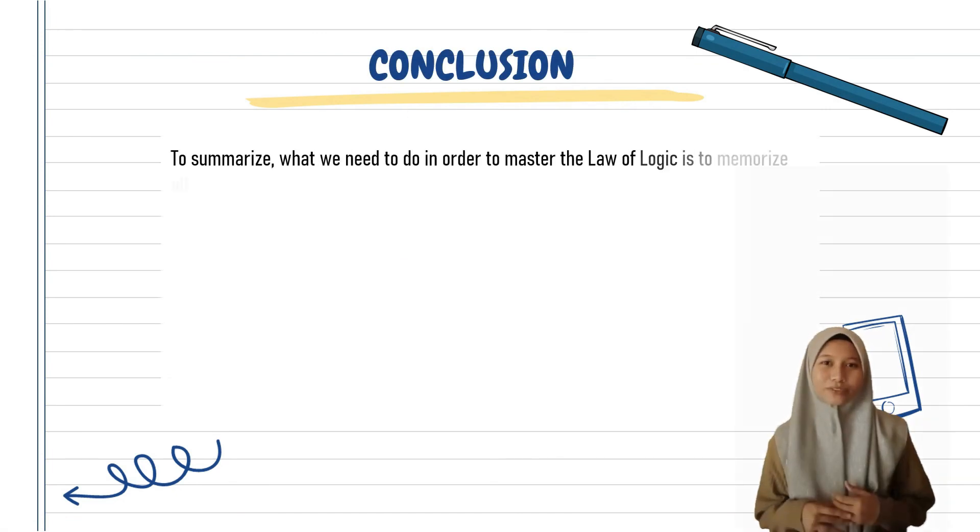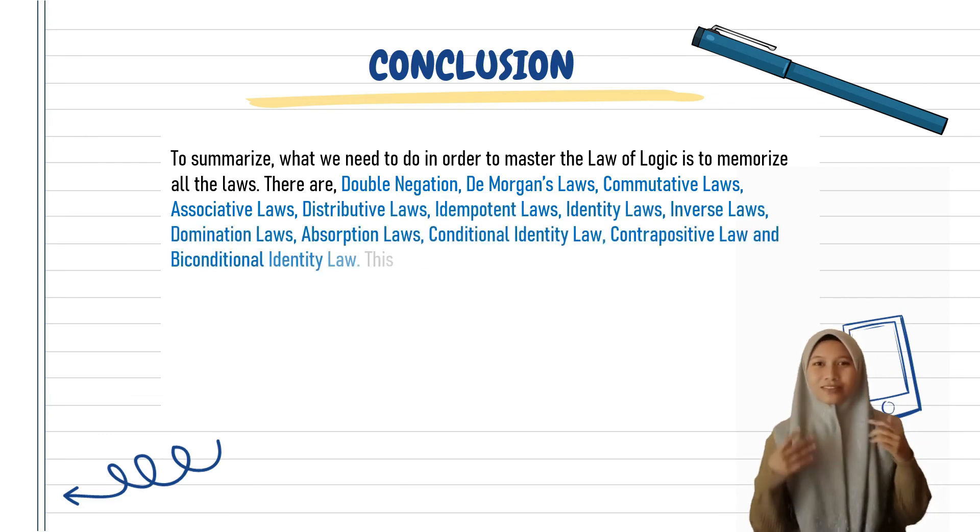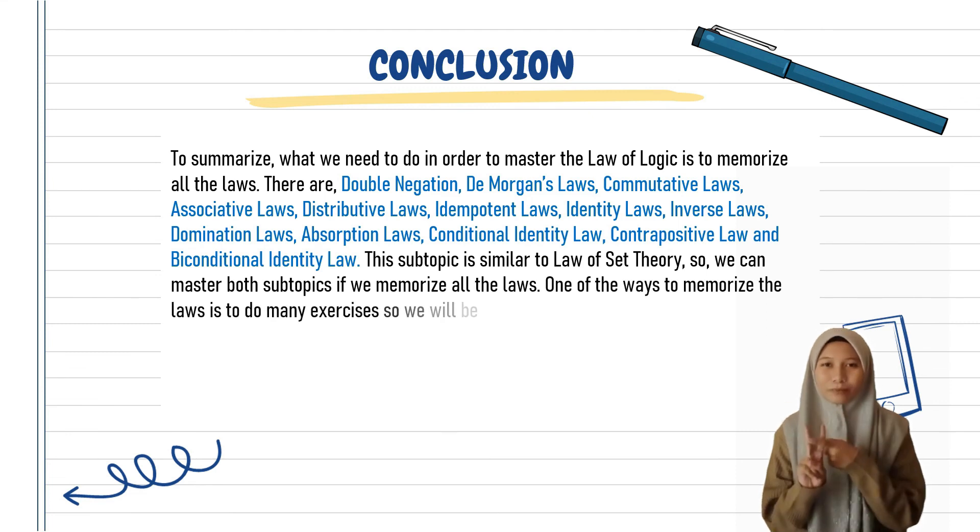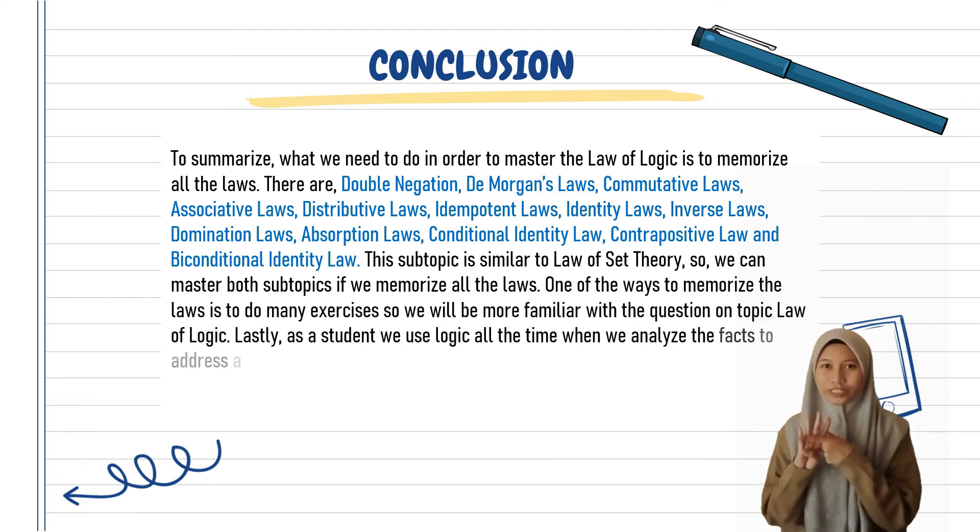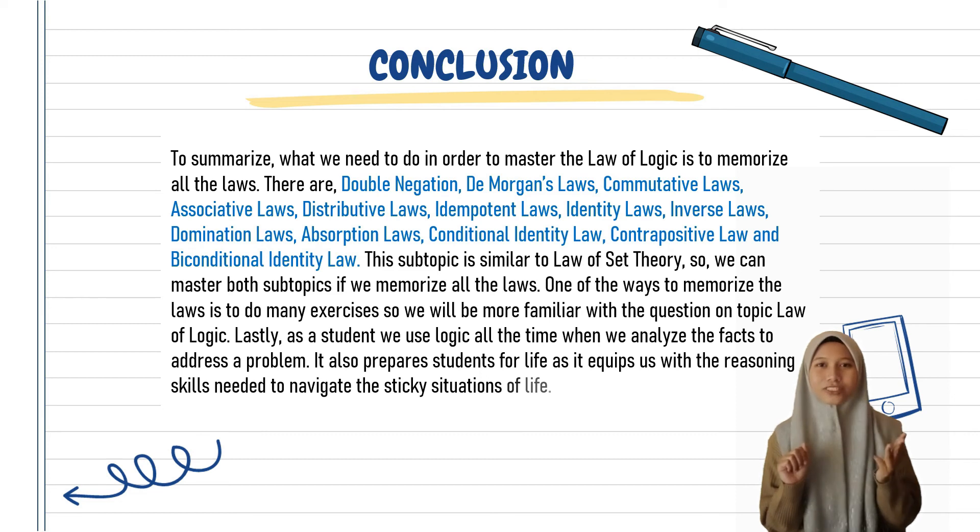To summarize, what we need to do in order to master the Law of Logic is to memorize all the laws. They are: Double Negation, De Morgan's Law, Commutative, Associative, Distributive, Idempotent, Identity, Inverse, Domination, Absorption, Conditional Identity, Contrapositive, and Biconditional Identity Law.